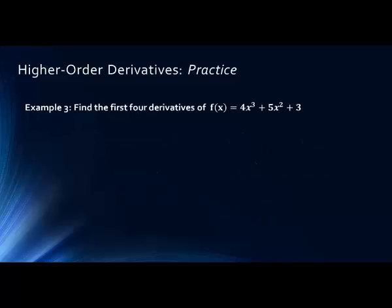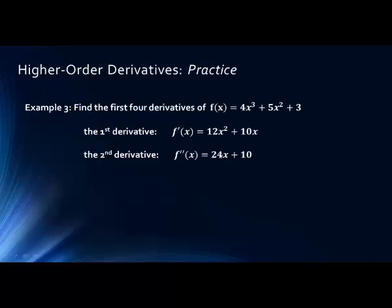Again, let's try another practice problem. Here it might be a good idea to hit pause again and try it on your own. The first derivative we get 12x^2 + 10x + 0, which we don't write. The second derivative: 24x + 10. The third derivative is 24, and the fourth derivative is 0. Again, hopefully these derivatives are becoming simpler and easier for you to do as you go through practice.